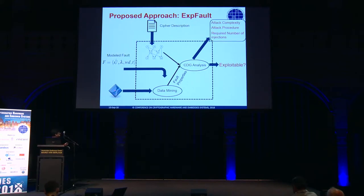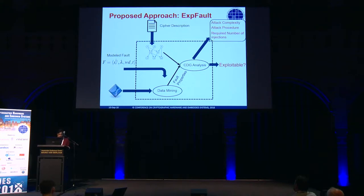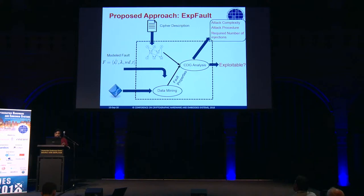ExpFault takes two kinds of input: an executable of the cipher and an abstract description of the cipher. It also takes a description of the fault. When it has a fault, it simulates the fault over the executable provided and generates fault simulation data. It then mines that fault simulation data to figure out certain properties that give hints about whether the fault is exploitable or not. After that, it uses a graph-based abstraction of the cipher to determine if the fault is really exploitable, and returns the attack complexity, the attack procedure, the complete attack path, and the required number of fault injections.